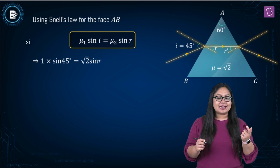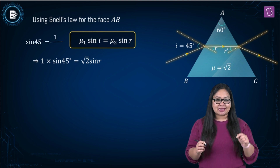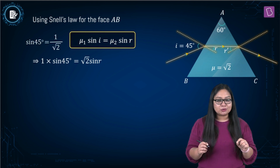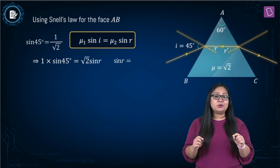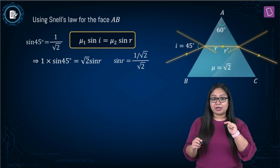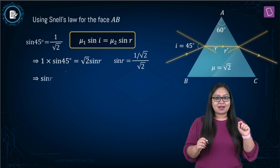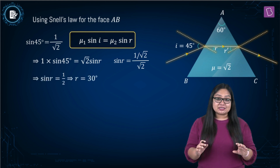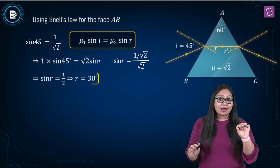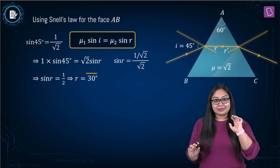Substituting sin 45 degrees as 1 by root 2, we get sin R is equal to 1 by root 2 divided by root 2, which is half. That gives us R as 30 degrees.